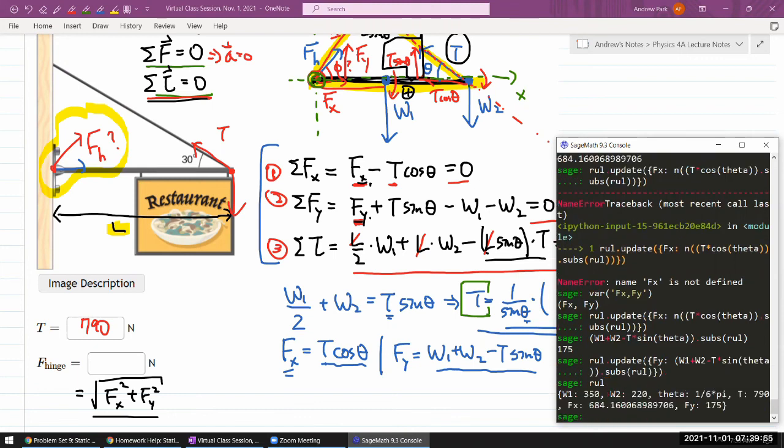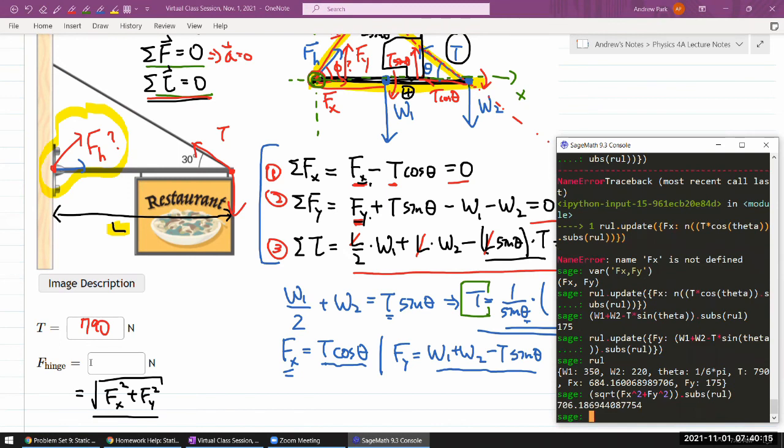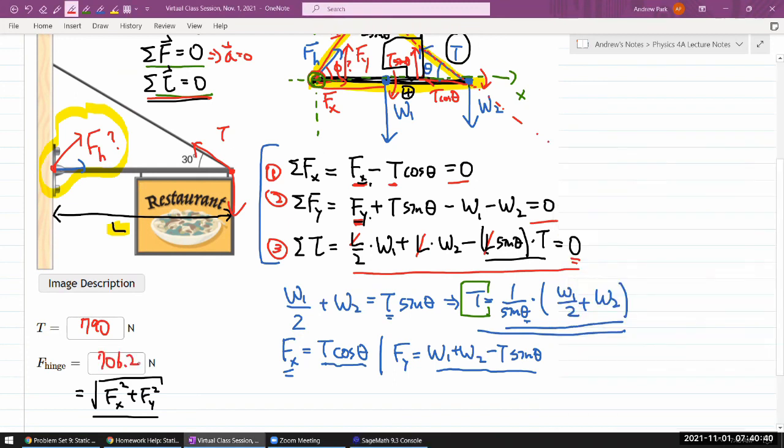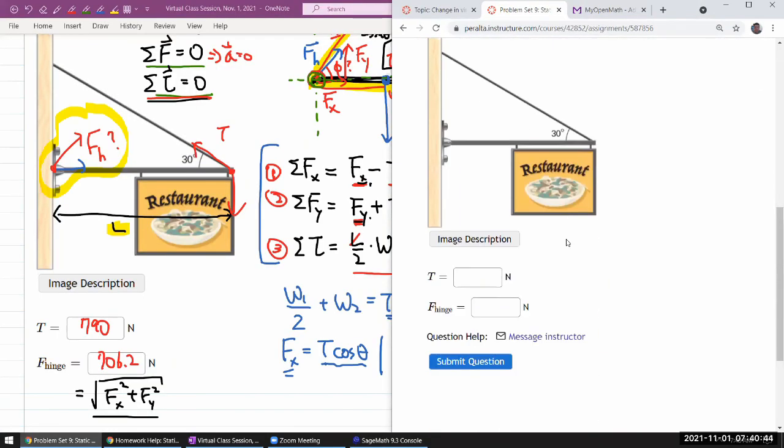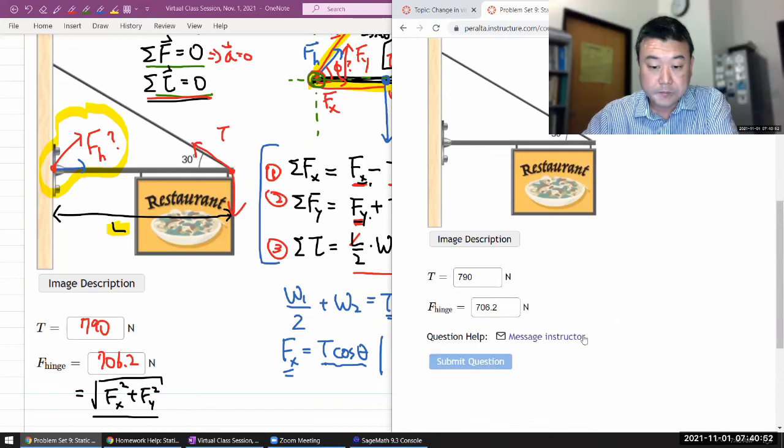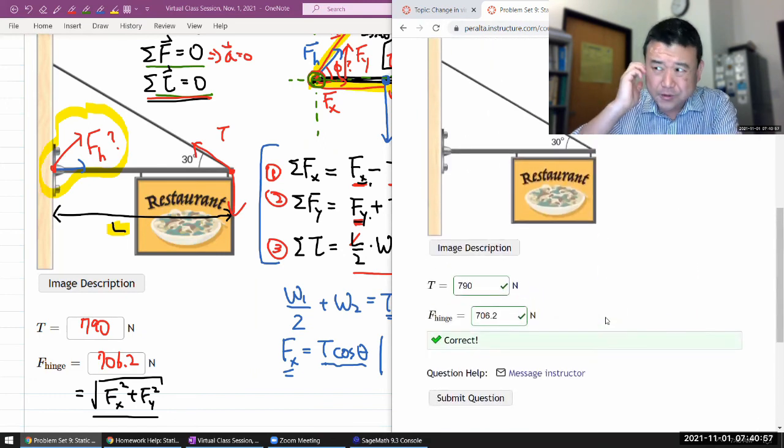These are my answers so far. For my final answer for hinge force, the magnitude, I can write it this way. It's a square root of Fx squared plus Fy squared, and I'm going to just substitute in the rule. 706.19. One of the reasons I wanted to do this step by step is so that I can see the numerical value for the Fy. This positive answer is telling me that the hinge force is pointing upward. I guess I had a decent intuition in thinking that it would have pointed upward. Let me put in the answers and just make sure I didn't make any mistakes. 790 and 706.2. Yeah. Okay, that took a lot longer than it should have.